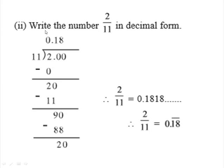Example 2: write the number 2/11 in decimal form. We divide 2 by 11. Since 2 is smaller than 11, write it as 2.00. We take 11 zeros are 0, giving remainder 2. Bring down 0 — the number becomes 20. 11 ones are 11; subtract 11 from 20 to get remainder 9. Bring down another 0 — the number becomes 90. 11 eights are 88; subtract 88 from 90 to get remainder 2.